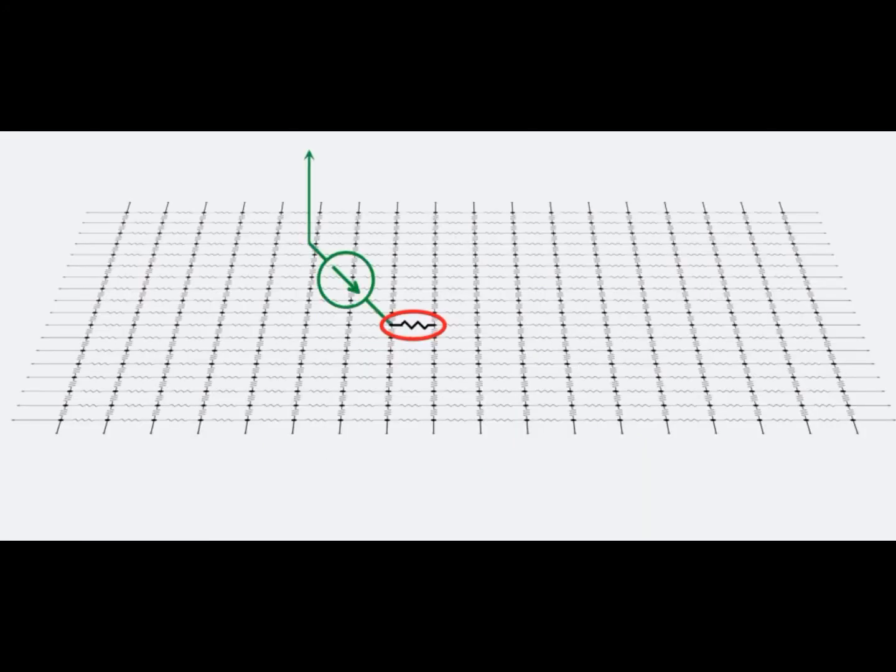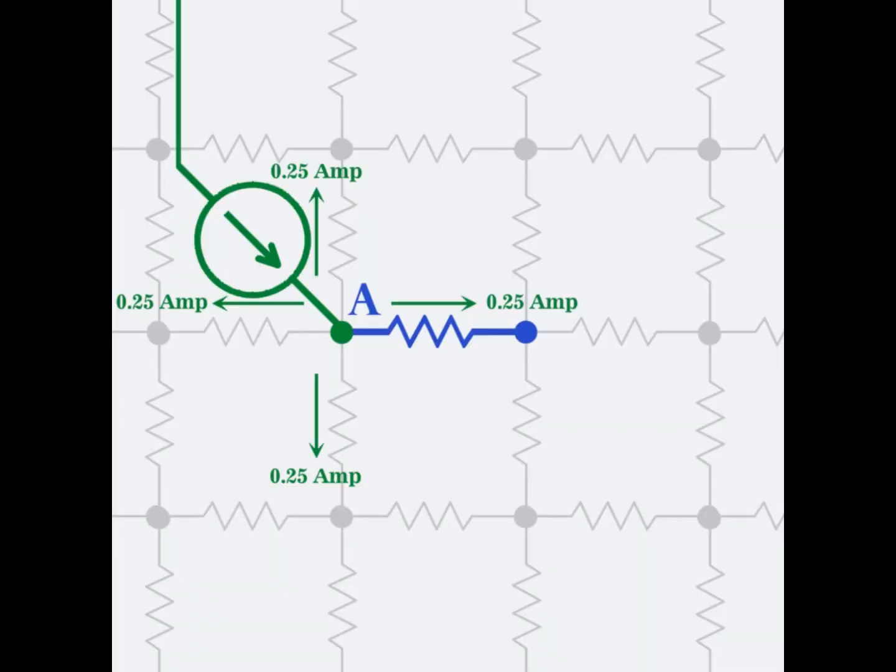One technique is to apply a 1 ampere current source to a node at infinity and the other at node A of one of the resistors. Since the network is symmetrical, an equal amount of current flows through each resistor of the terminal. Clearly, the value of this current is one fourth of an ampere.